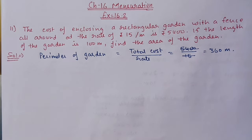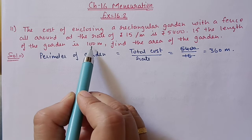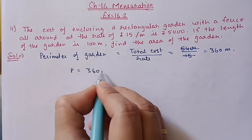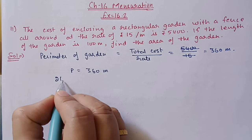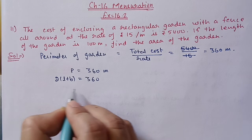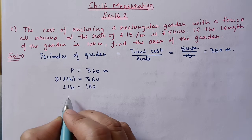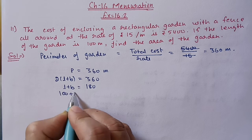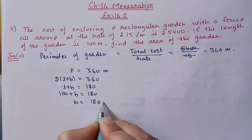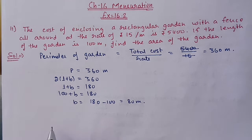The perimeter is 360 meters. Now with the help of perimeter we have to find out the breadth — length is already given in the question. Perimeter is 360 meters and perimeter equals 2(L + B). Shifting 2 to the other side gives us 180 meters. Length is given as 100, so breadth equals 180 minus 100, which equals 80 meters.